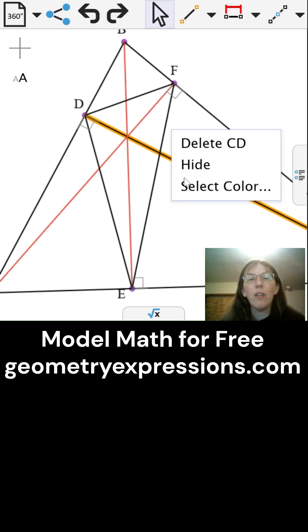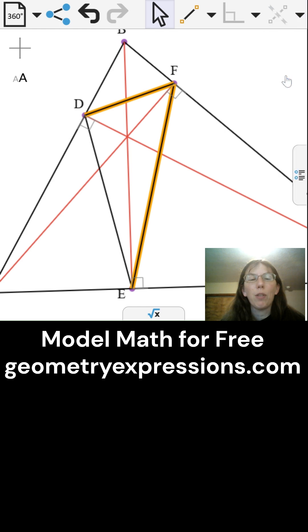Since the incenter is the intersection of the angle bisectors, I will find each angle bisector for the smaller triangle.